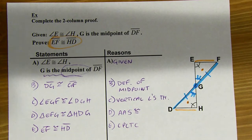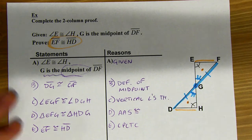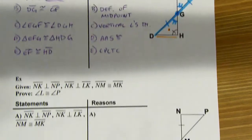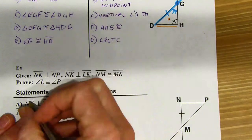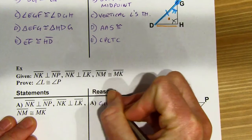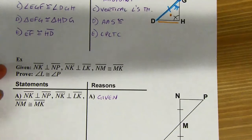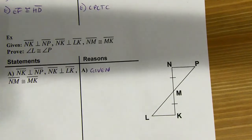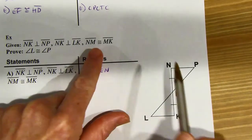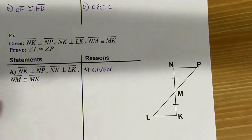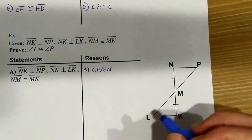The next proof is pretty similar, so maybe you want to pause the video and try it out. There are some technicalities that people often miss. I know that's the given info — some congruent sides, NM and MK, and some perpendicular lines. I have to think about what perpendicular lines actually mean.